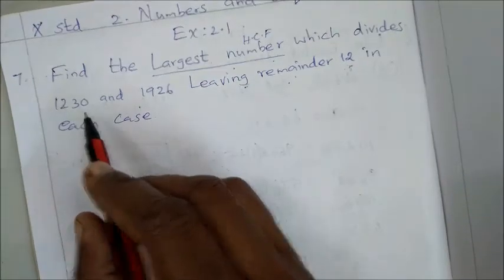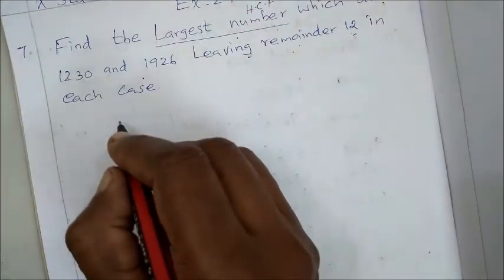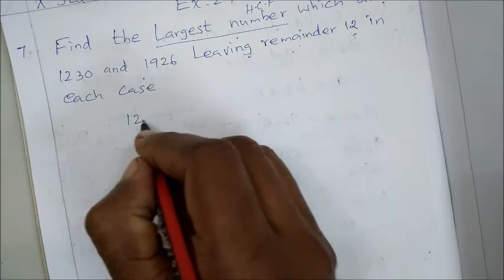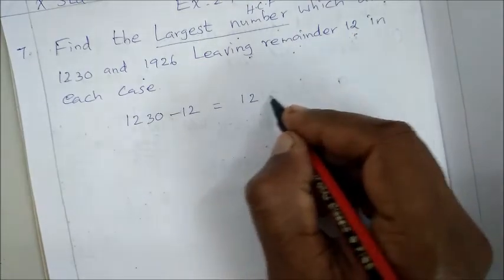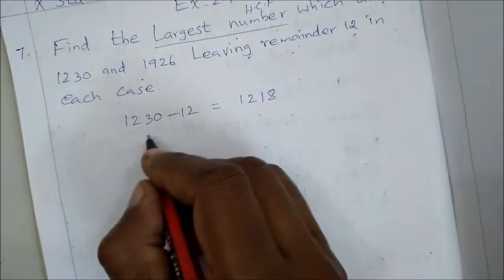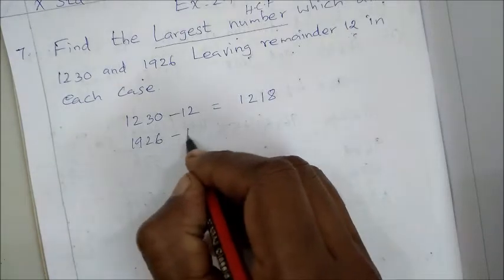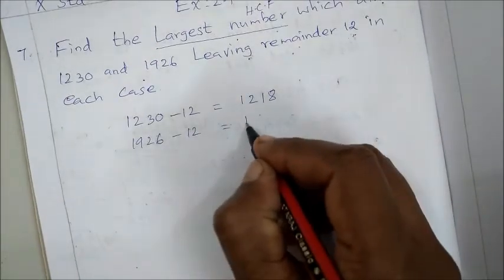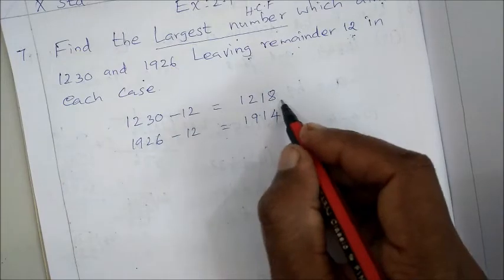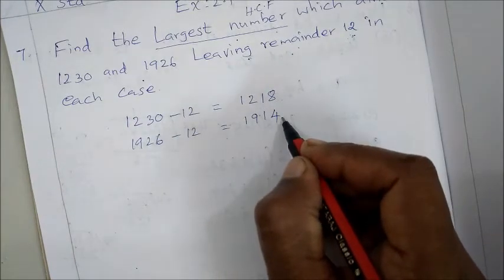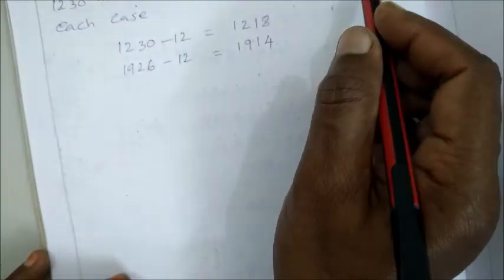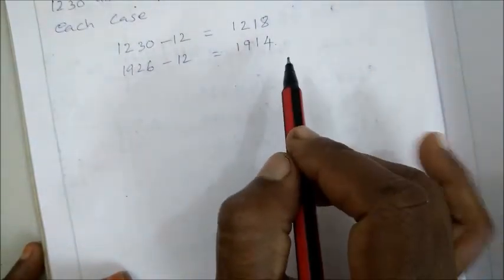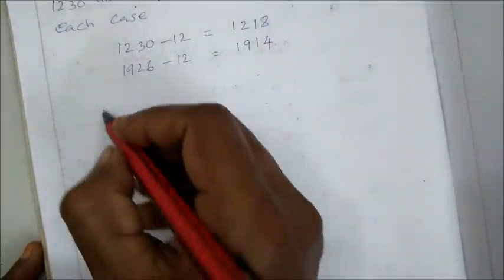We need to find the HCF of the two numbers. Since remainder 12 is left, we remove it by subtracting: 1230 minus 12 equals 1218, and 1926 minus 12 equals 1914. Then we find the HCF of 1218 and 1914.